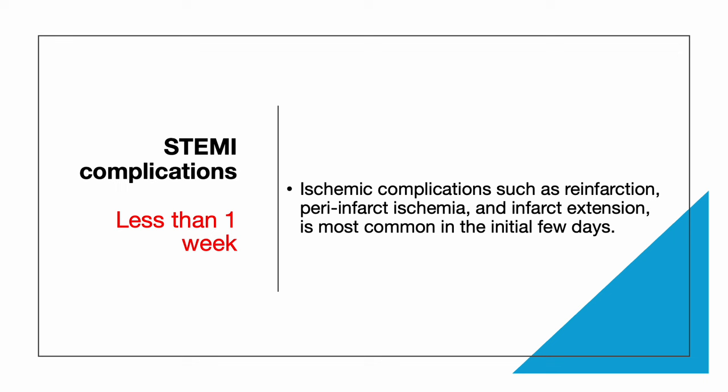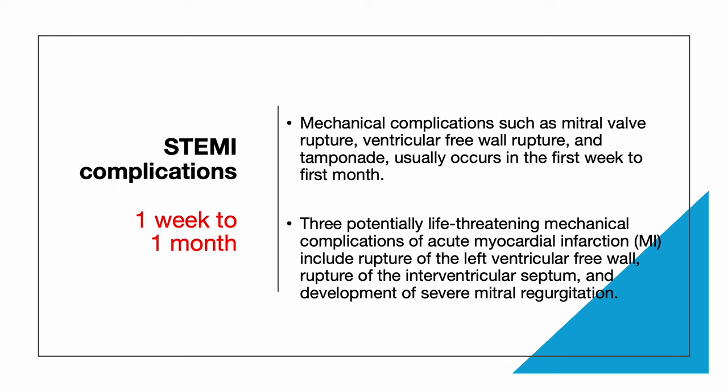Ischemic complications such as reinfarction, peri-infarct ischemia, and infarct extension are most common in the initial few days to one week. Mechanical complications such as mitral valve rupture, ventricular free wall rupture, and tamponade usually occur in the first week to first month. Three potentially life-threatening mechanical complications of acute MI include rupture of the left ventricular free wall, rupture of the interventricular septum, and development of severe mitral regurgitation.